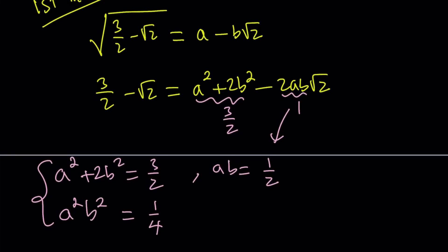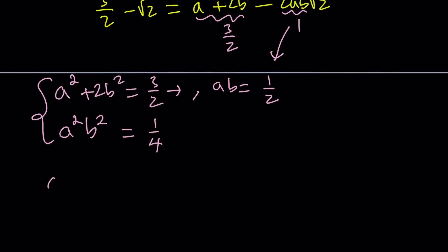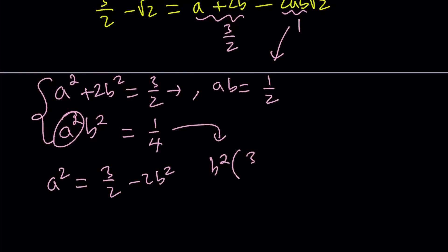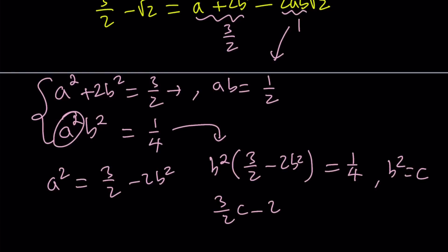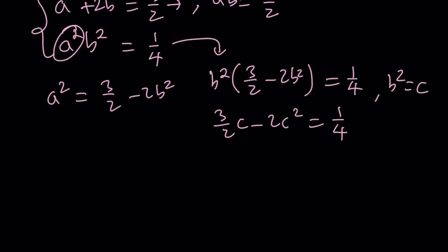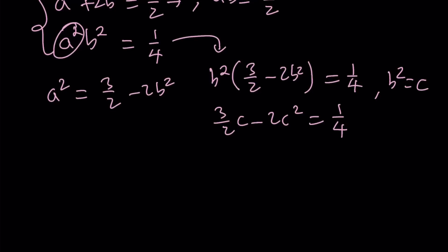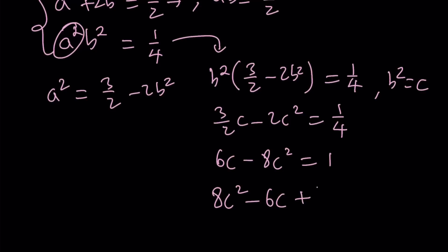We can isolate a squared from the first equation, write it as 3 halves minus 2b squared, and plug it into the squared version. That gives us b squared times 3 halves minus 2b squared equals 1 fourth. Setting b squared equal to c, we write this as 3 over 2 times c minus 2c squared equals 1 fourth. Multiplying both sides by 4, we get 6c minus 8c squared equals 1, so 8c squared minus 6c plus 1 equals 0.